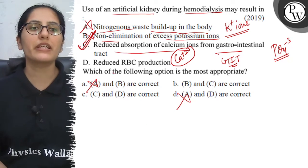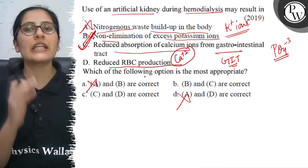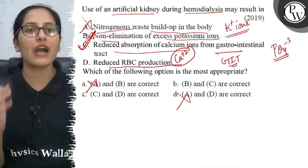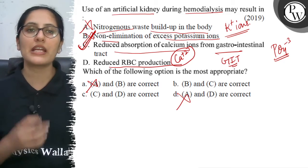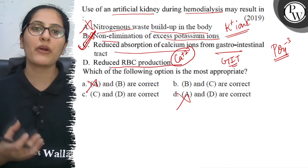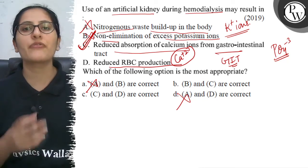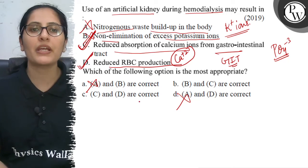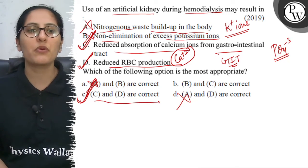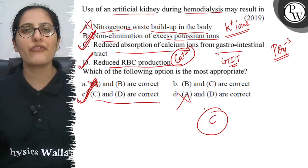Option D states reduced RBC production. The kidney secretes erythropoietin hormone, which is responsible for the production of RBCs. Since the kidney is non-functional, erythropoietin secretion will not occur through the artificial kidney, so RBC production will be reduced. Therefore, both C and D are correct — the correct answer is Option C, in which both C and D are given. Best of luck.